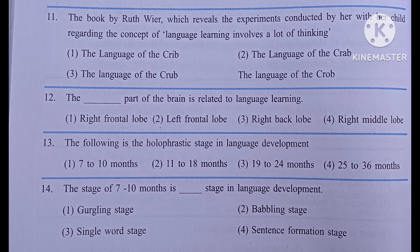The dash part of the brain is related to language learning: number one, right front lobe; number two, left front lobe; number three, right back lobe; number four, right middle lobe. The answer is left front lobe.